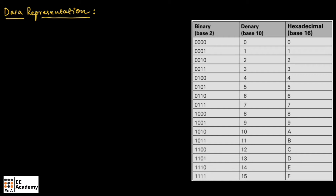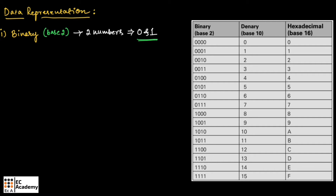There are three basic ways how we can represent a number. The first type is binary representation, which is given by base 2. Base 2 represents binary number representation. It consists of two numbers, which is 0 and 1. That is why it is having base 2.